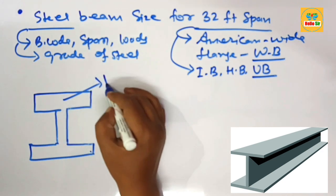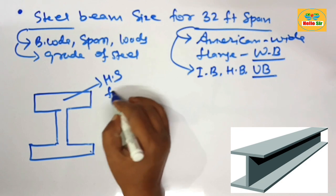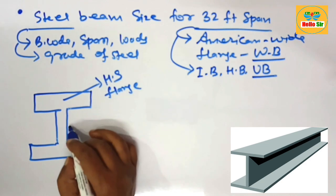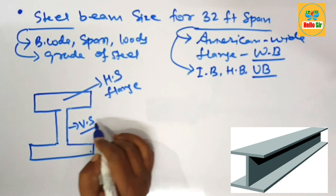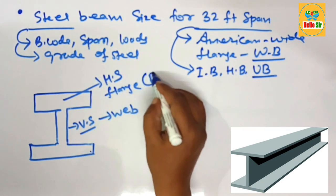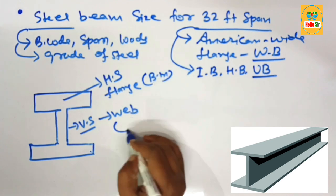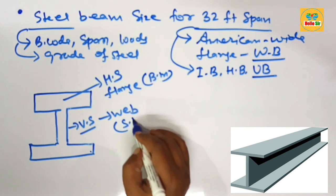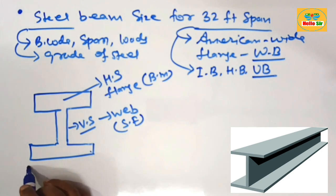This one is horizontal section of the beam known as flange and this one vertical section of the beam known as web. Generally flange resists bending moment and web resists shear forces acting on it.